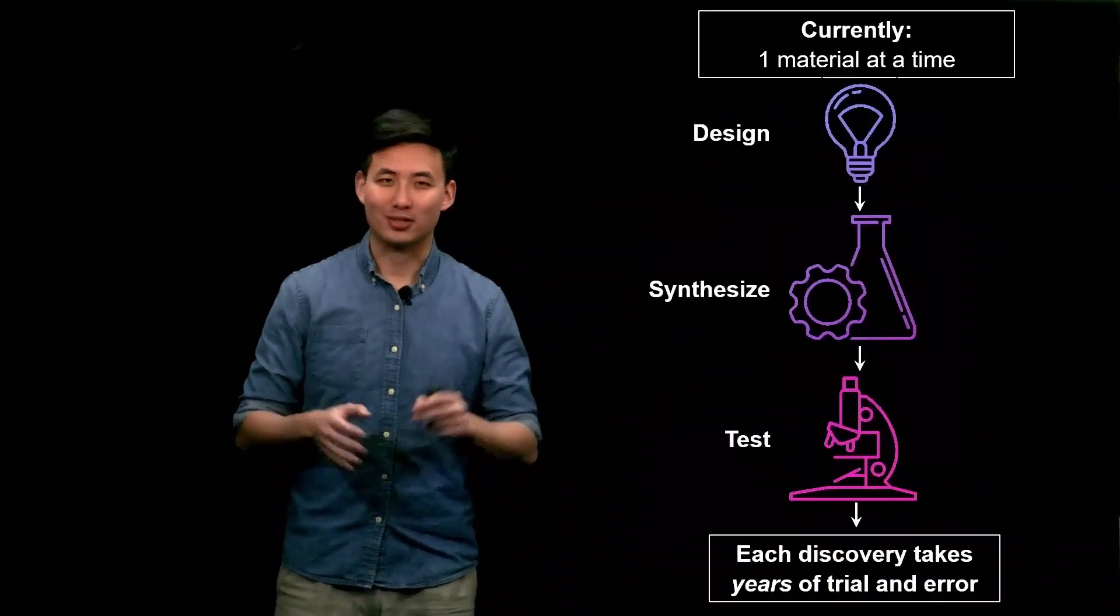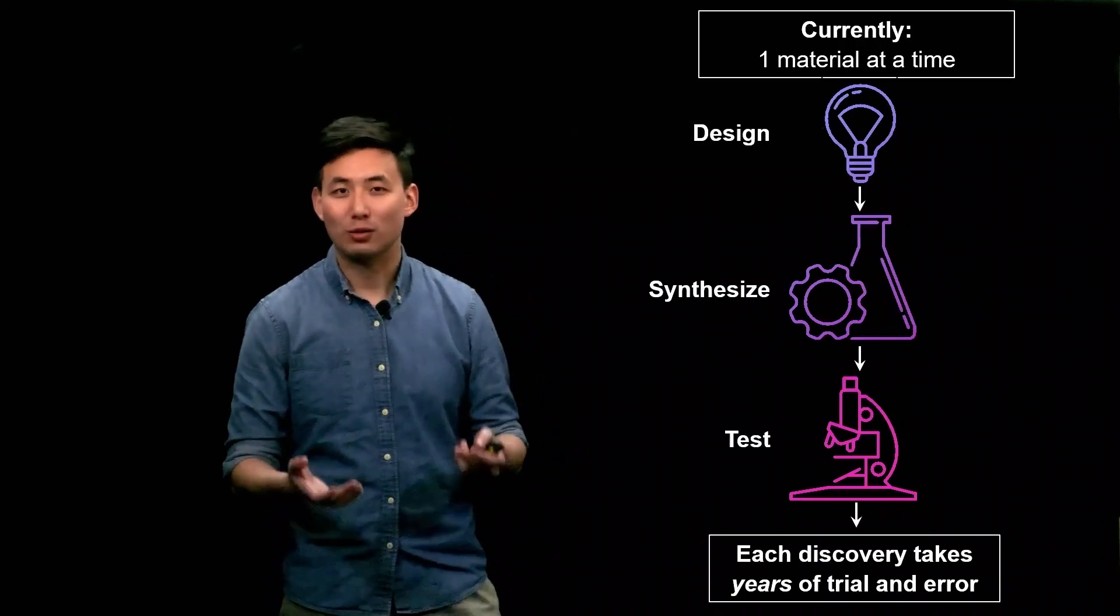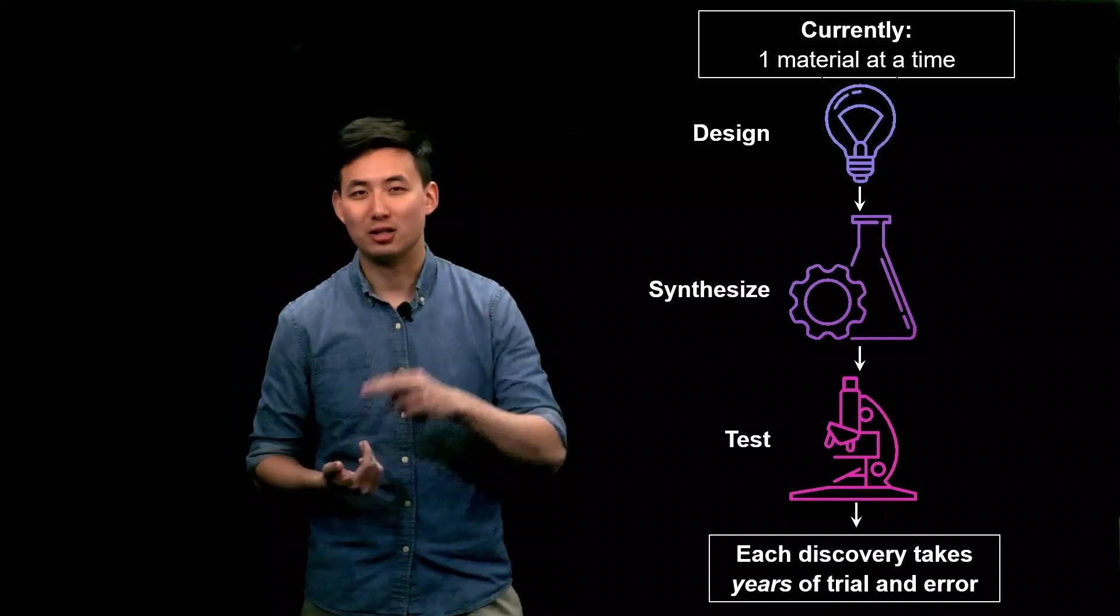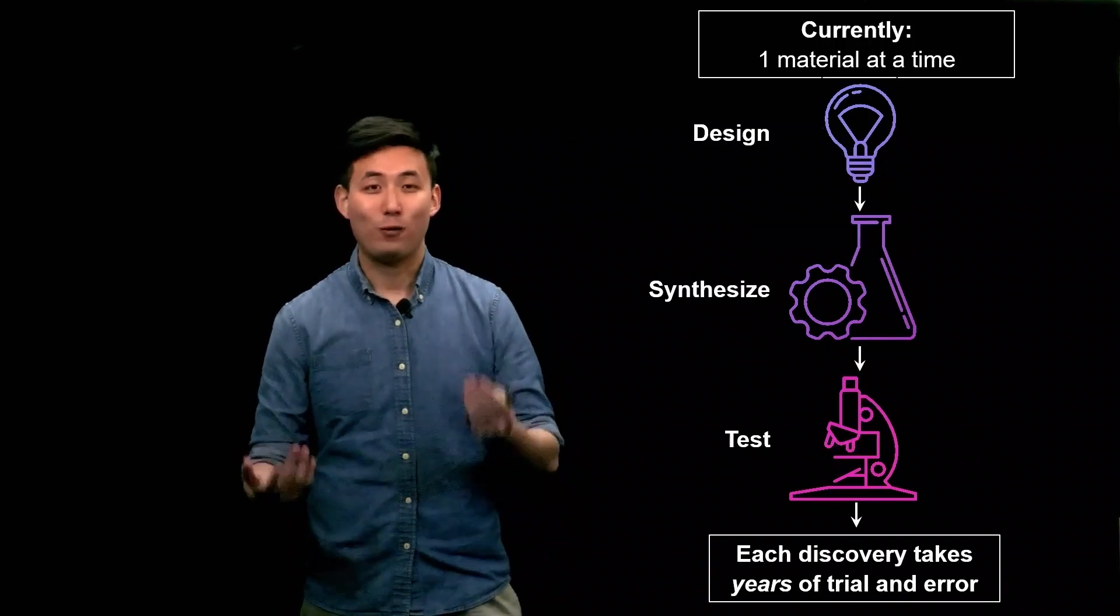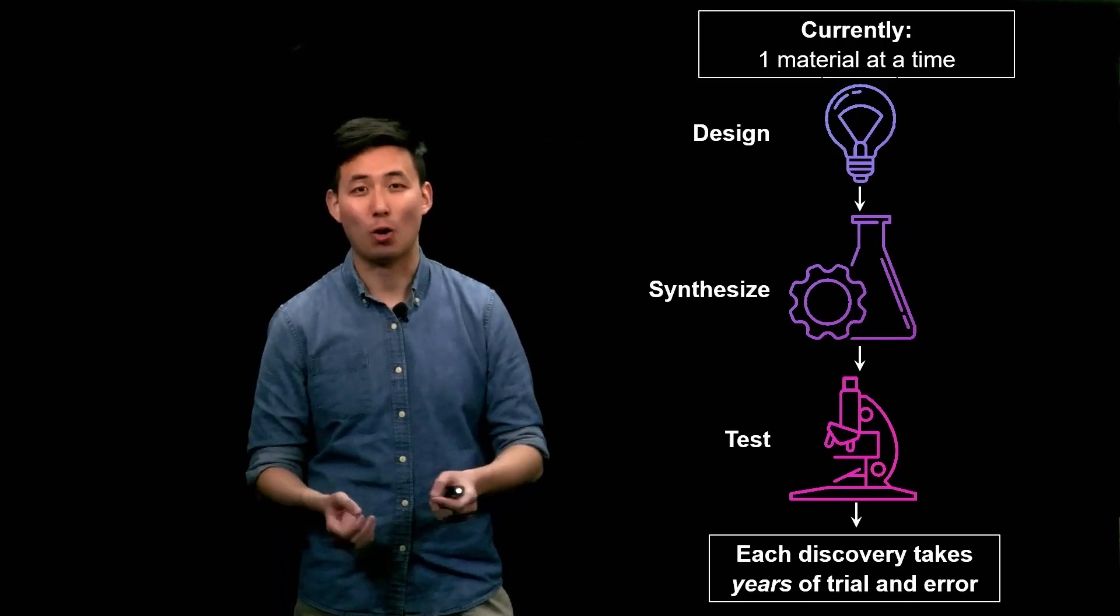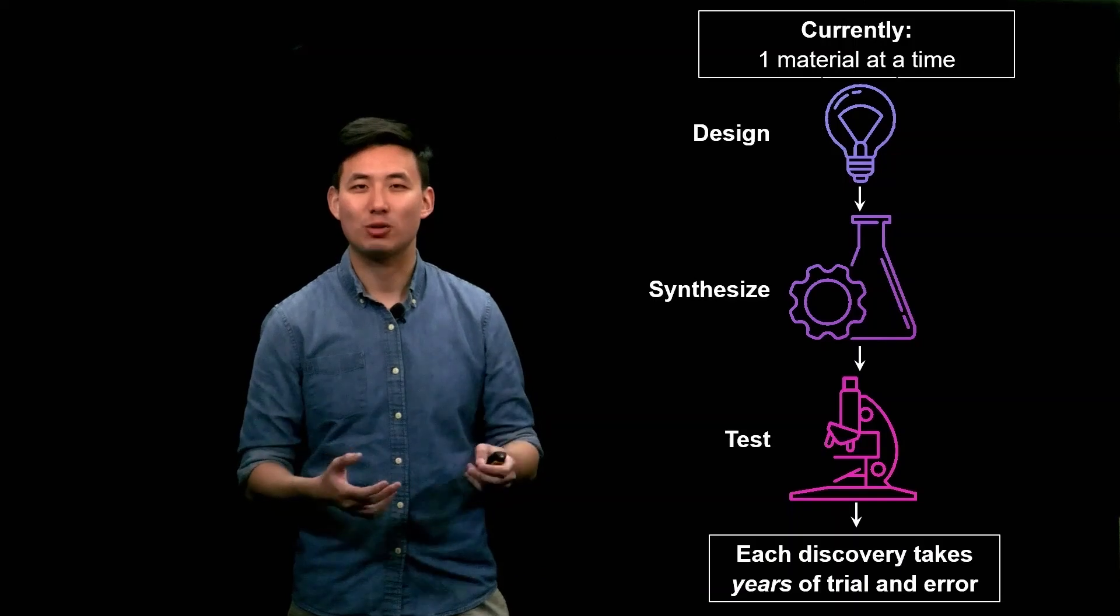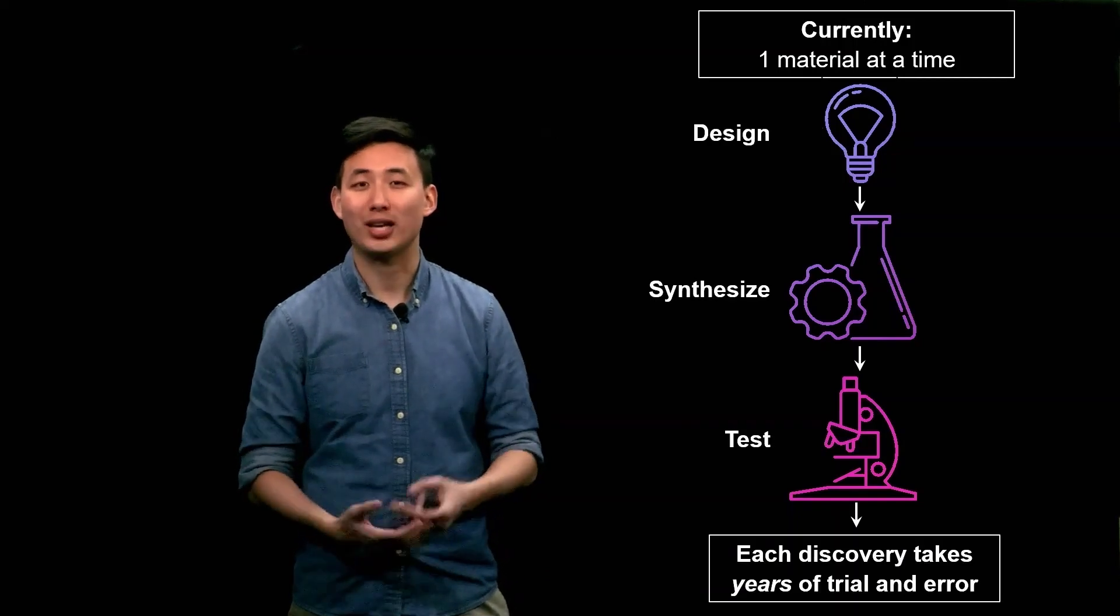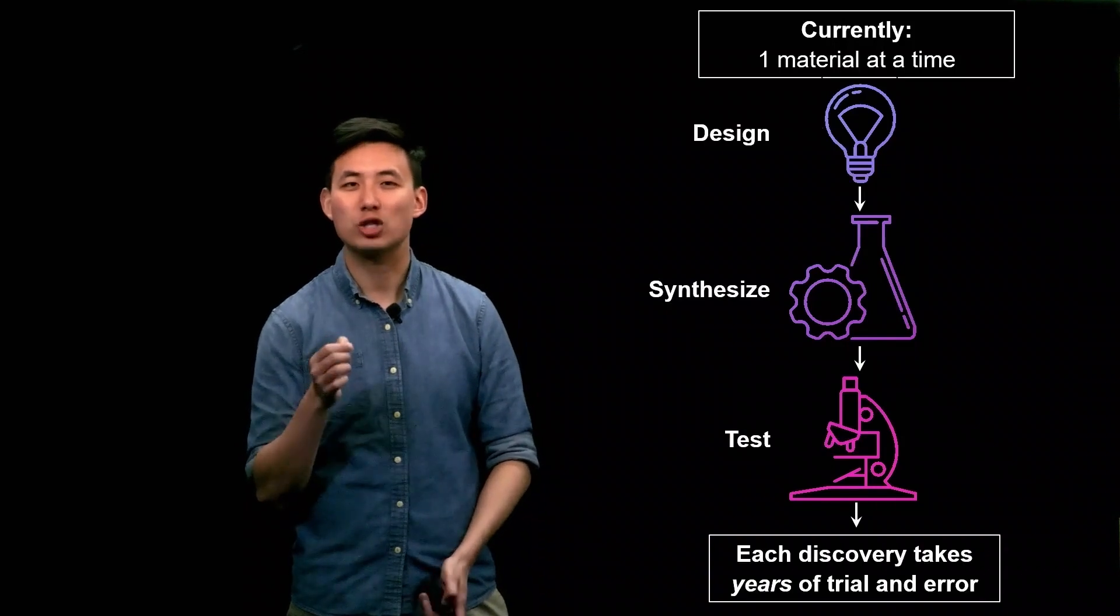We are constantly finding new materials with exciting properties that can impact our lives. Examples from the last centuries include aerogels, amorphous metals, silicon and high entropy alloys. Unfortunately, this discovery process traditionally has been very slow. Until now, most scientists design, synthesize and test materials one by one, which is time consuming and inefficient. It takes years to decades to discover new revolutionary materials.